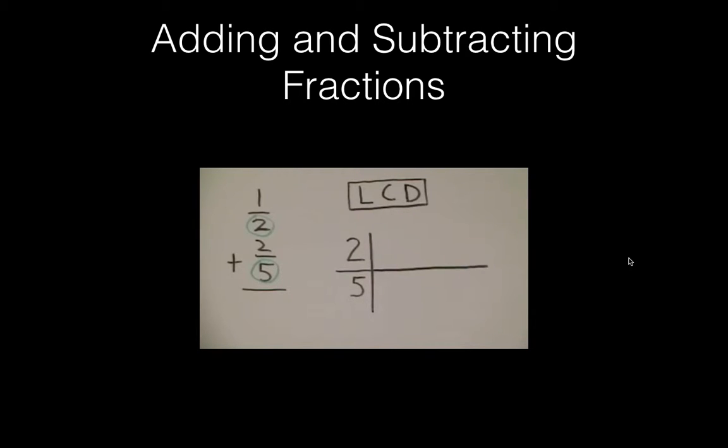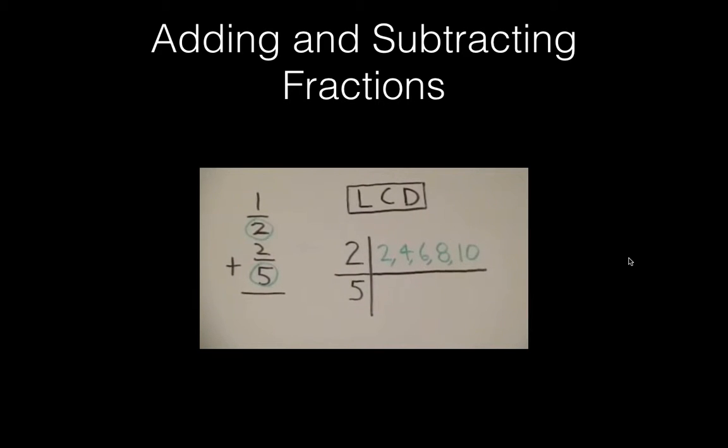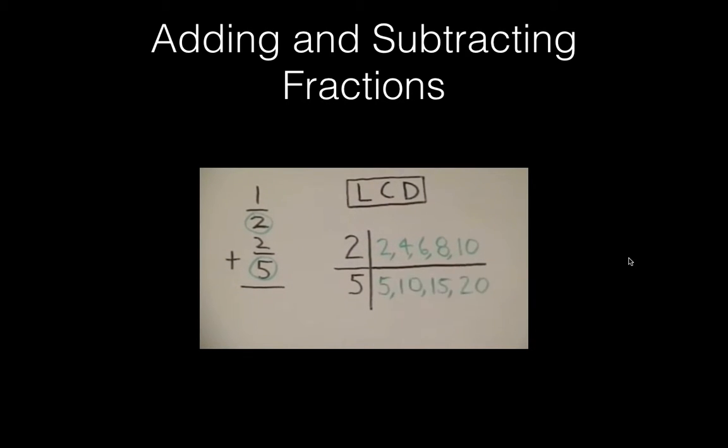So once again, we need to find an LCD or least common denominator for 2 and 5. The first thing we do is list the first 4 or 5 multiples for 2. Next, we list the first 4 or 5 multiples for 5. Once we do this, we look for common multiples. In this case, 10 would be a common multiple.